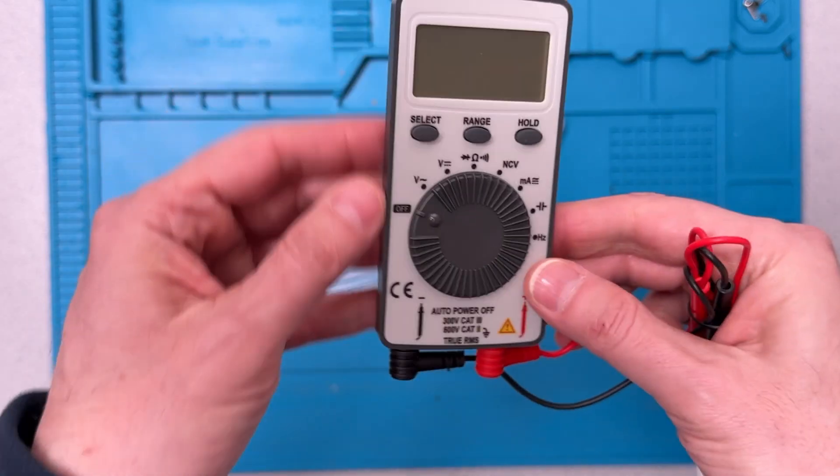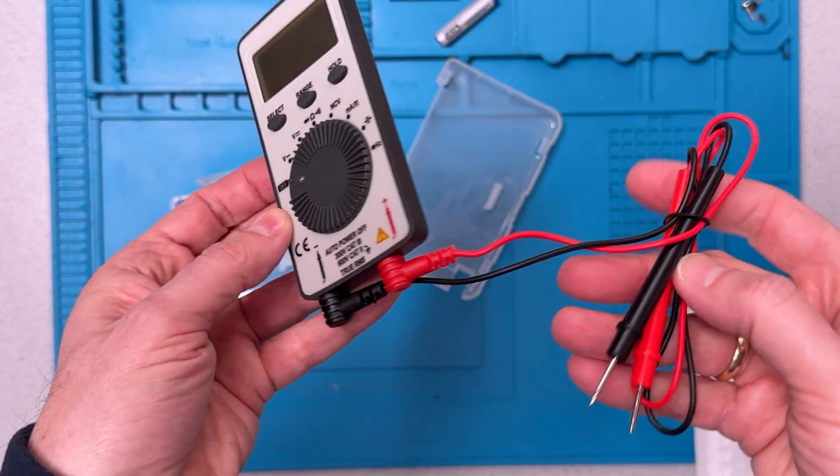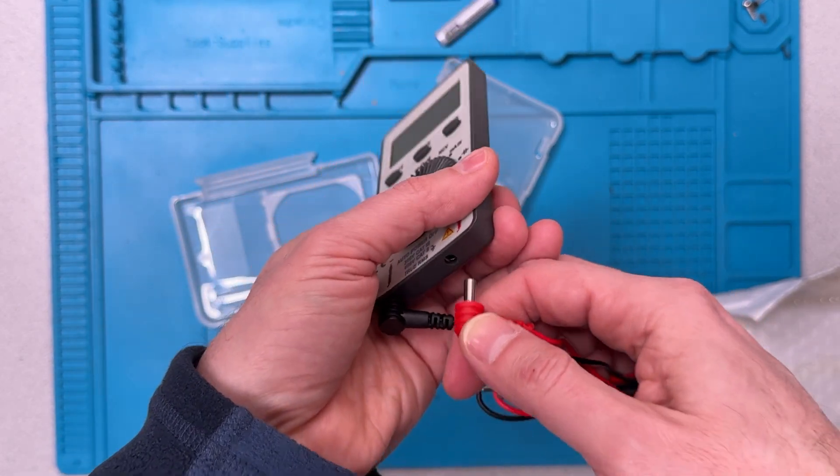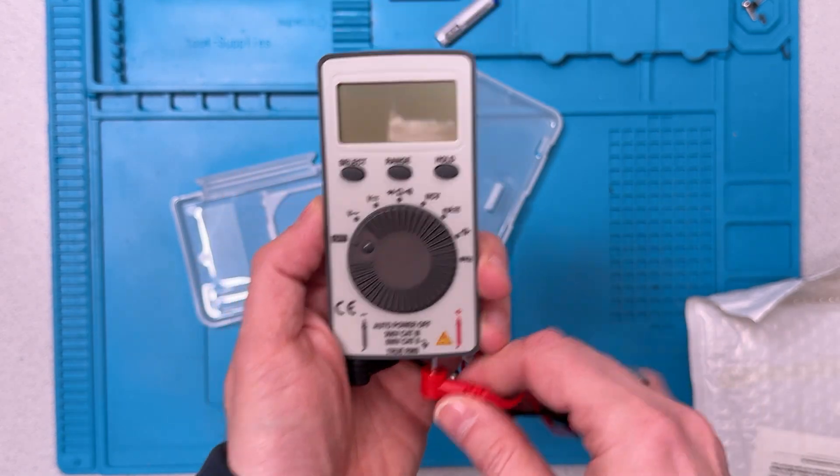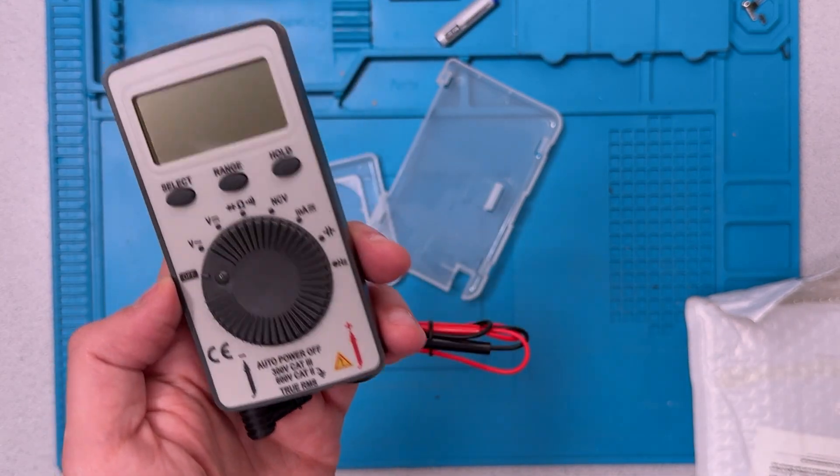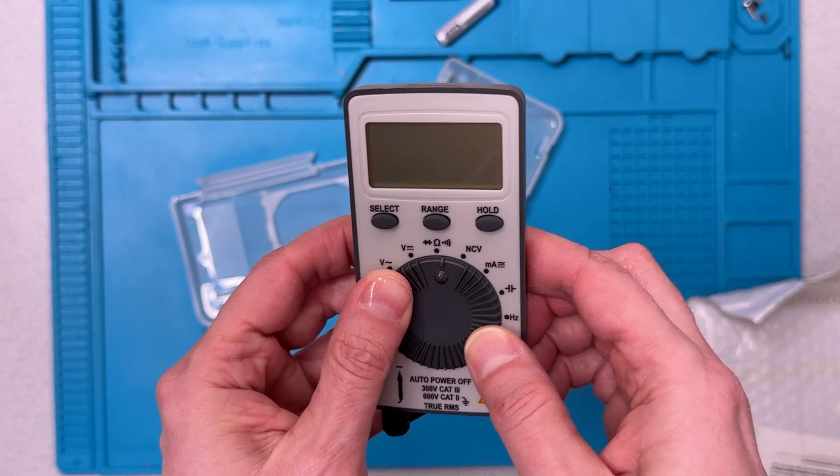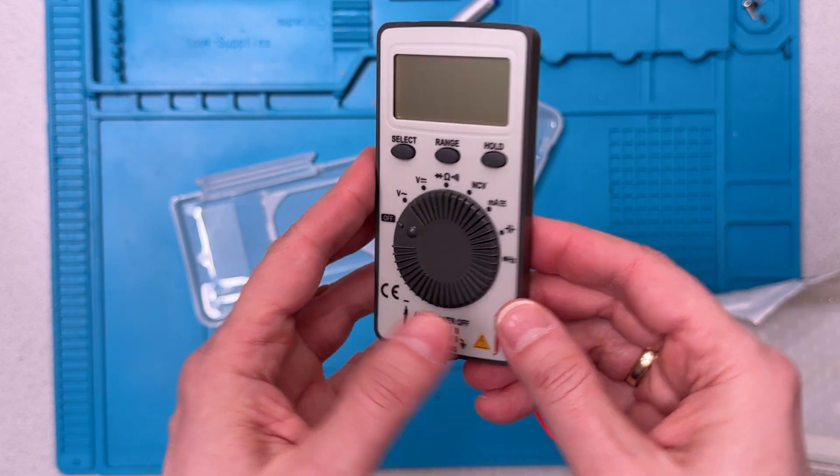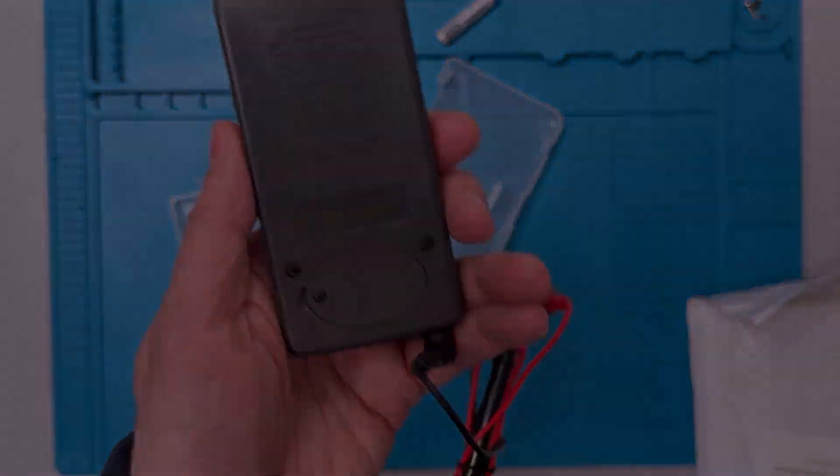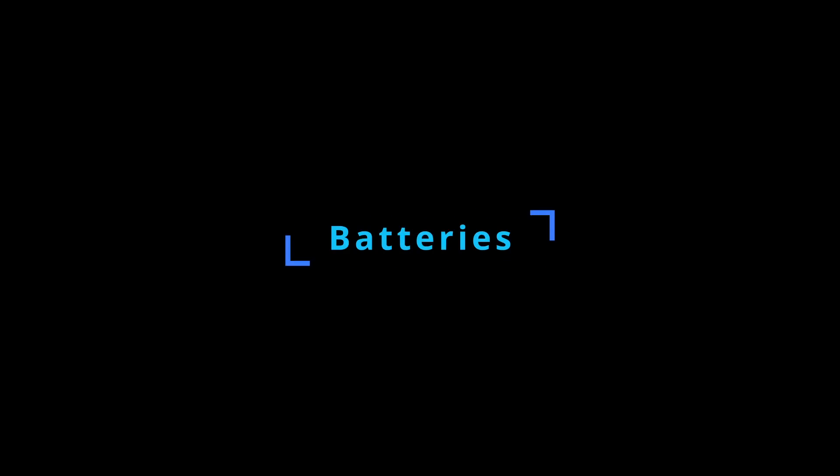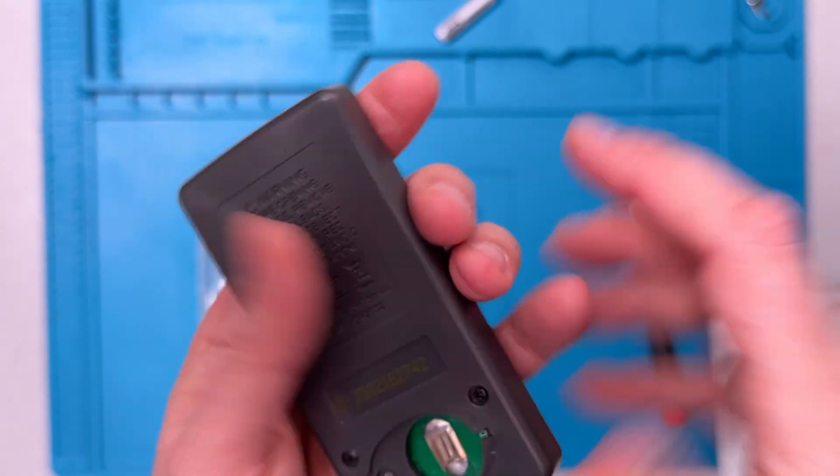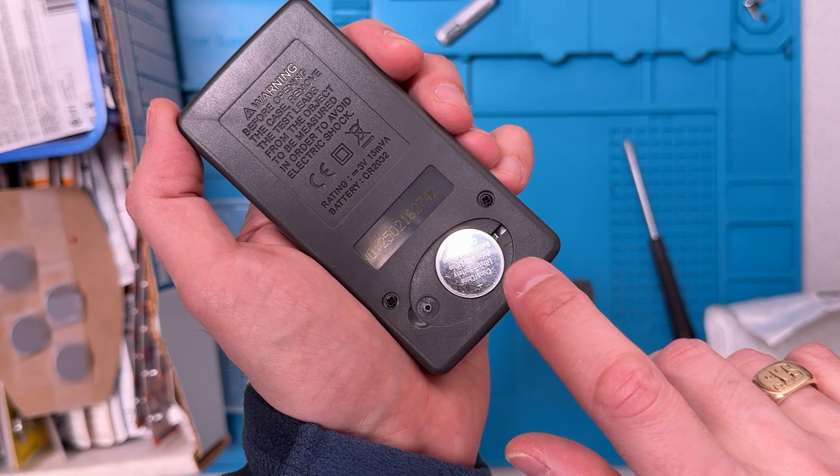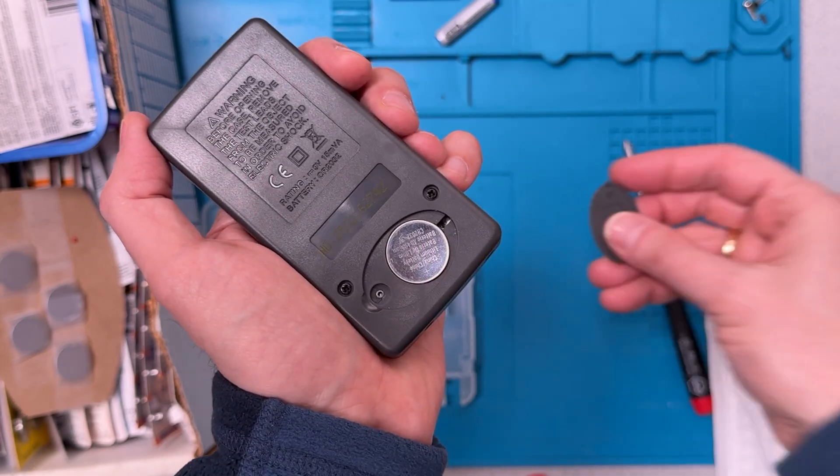This is a very slim meter, slimmer than normal and the probes are not standard probes. I'll have to see if we can fit regular banana jacks in here. And it doesn't look like there's any battery in here, so I'll have to get the batteries in there as well. Let me figure out what kind of batteries I need to put in here.